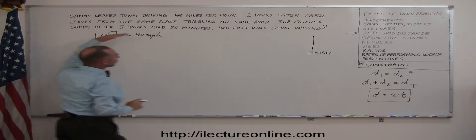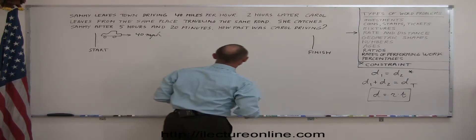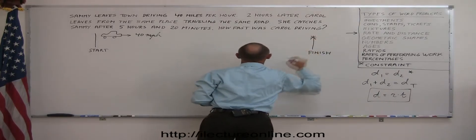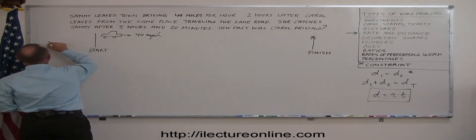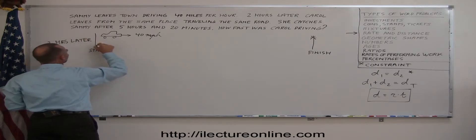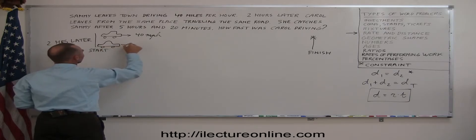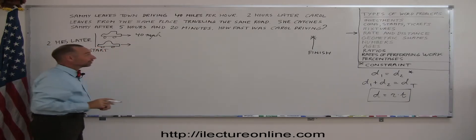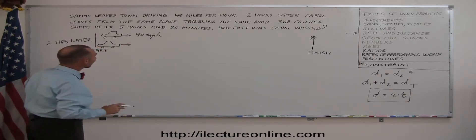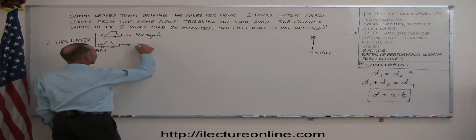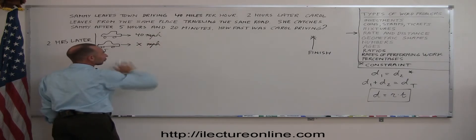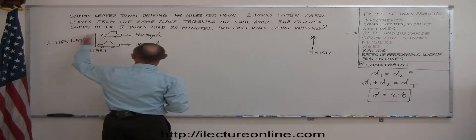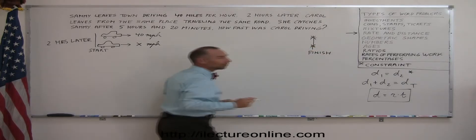And after 5 hours and 20 minutes, Sammy ends up over there. Two hours later, Carol takes off in her car. She drives faster, obviously, otherwise she couldn't catch Sammy. But we don't know how fast, so let x represent the speed at which Carol travels. And after a total of 5 hours and 20 minutes after Sammy left, Carol also arrives at the same spot.